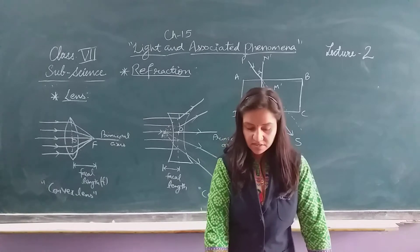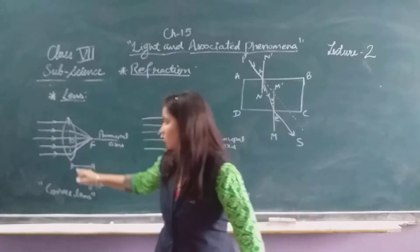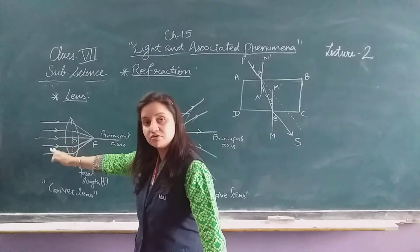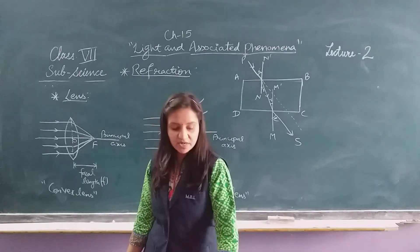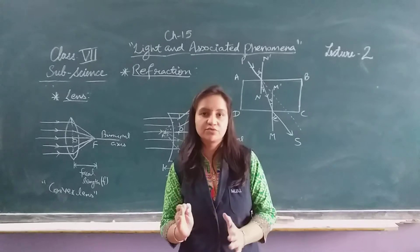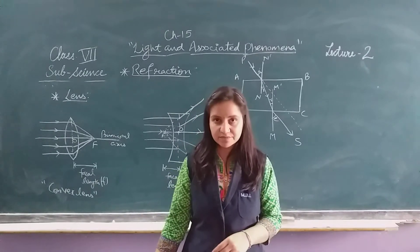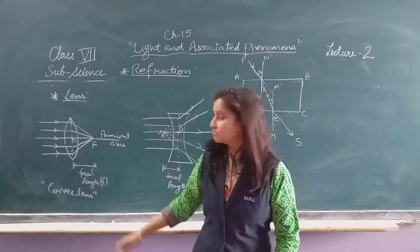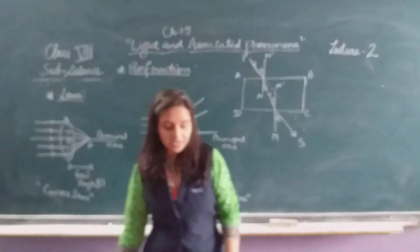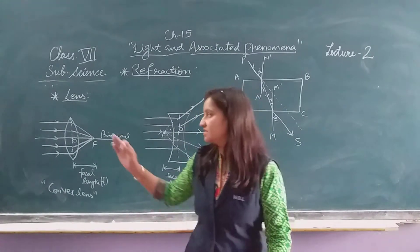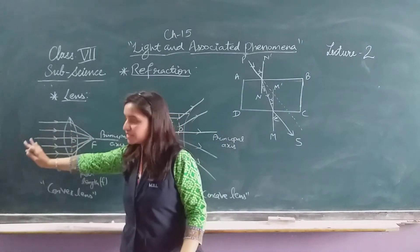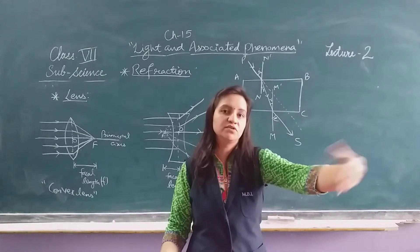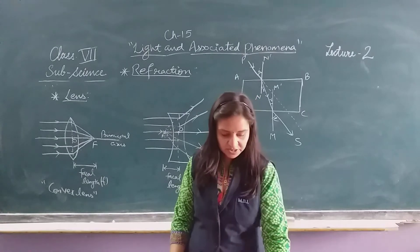For a convex lens, if the object is placed between the principal focus and the lens, the image forms on the same side of the lens as the object. The image is magnified, virtual, and upright. Magnified means it is bigger, virtual means it is not real, and upright means it is in the correct orientation. If the object is placed after F and 2F, the image forms on the other side of the lens. It will be magnified but real and inverted. Inverted means it is flipped upside down.